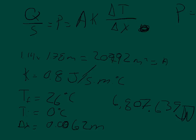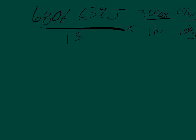It wants to know how much energy is lost through the window in one day. So I'll take 6807.639 joules per second and times this by 3600 seconds in an hour, and times this by 24 hours in one day. So my seconds will cancel out and my hours will cancel out, and my units will be joules per day.